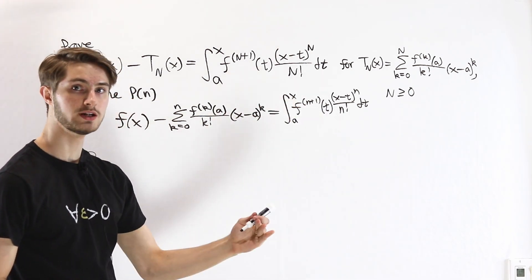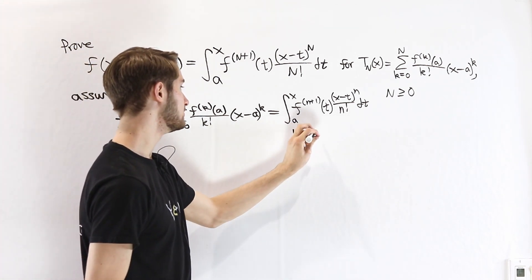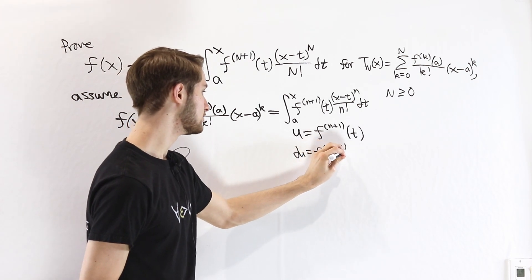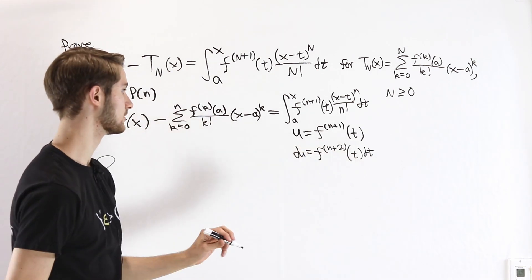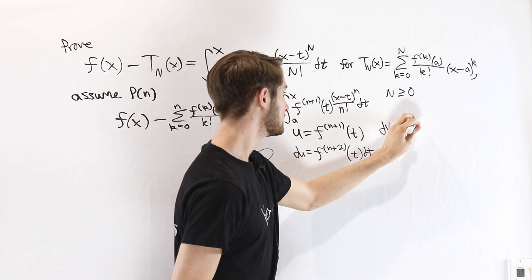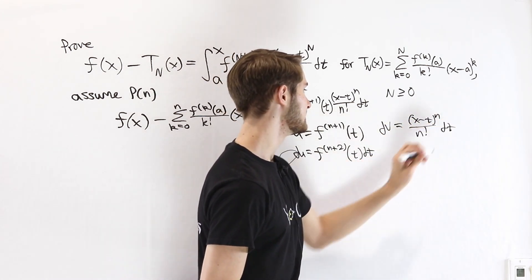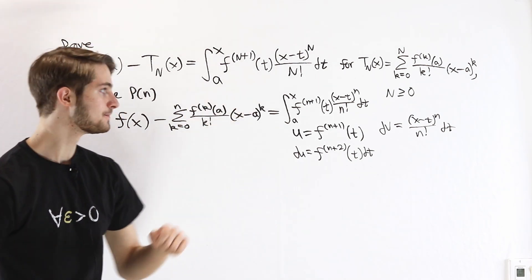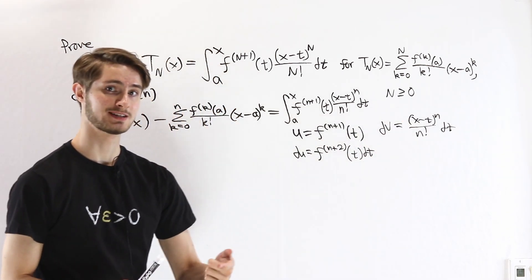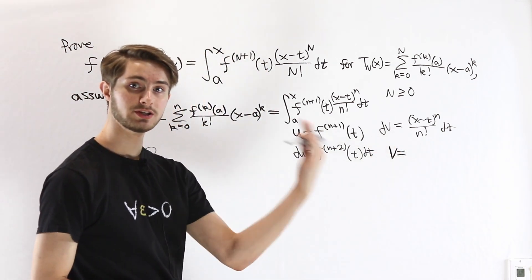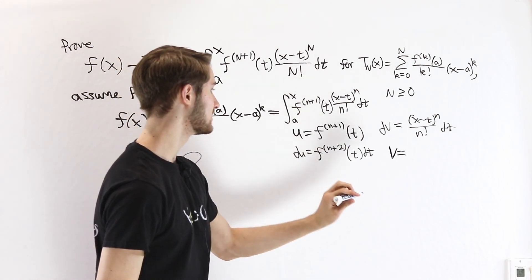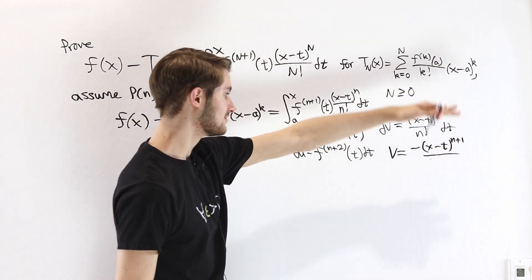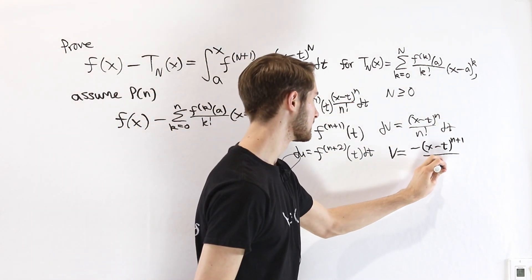We want to get the derivative from order n+1 to n+2. So we do integration by parts with u equals the (n+1)th derivative of f, making du equal to f^(n+2)(t) dt. That gives us the order of derivative we're looking for. Then dv is everything else: (x minus t)^n over n factorial dt. To find v, we integrate with respect to t, where x is a constant. Using a substitution, a negative comes out, giving v equals negative (x minus t)^(n+1) over (n+1) times n factorial, which is (n+1) factorial.